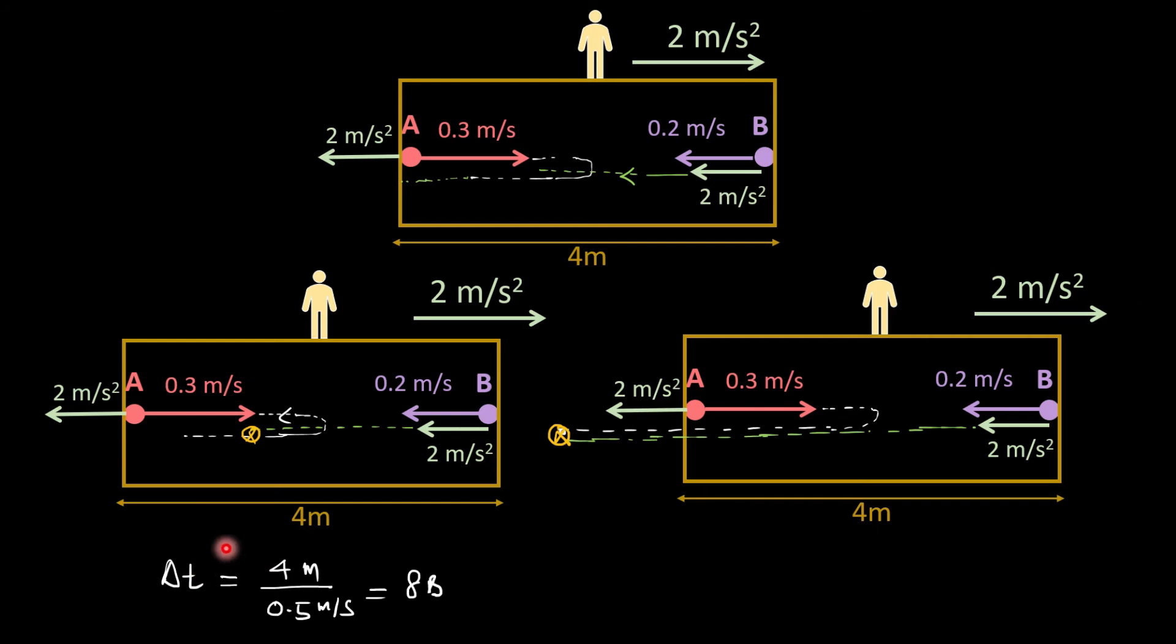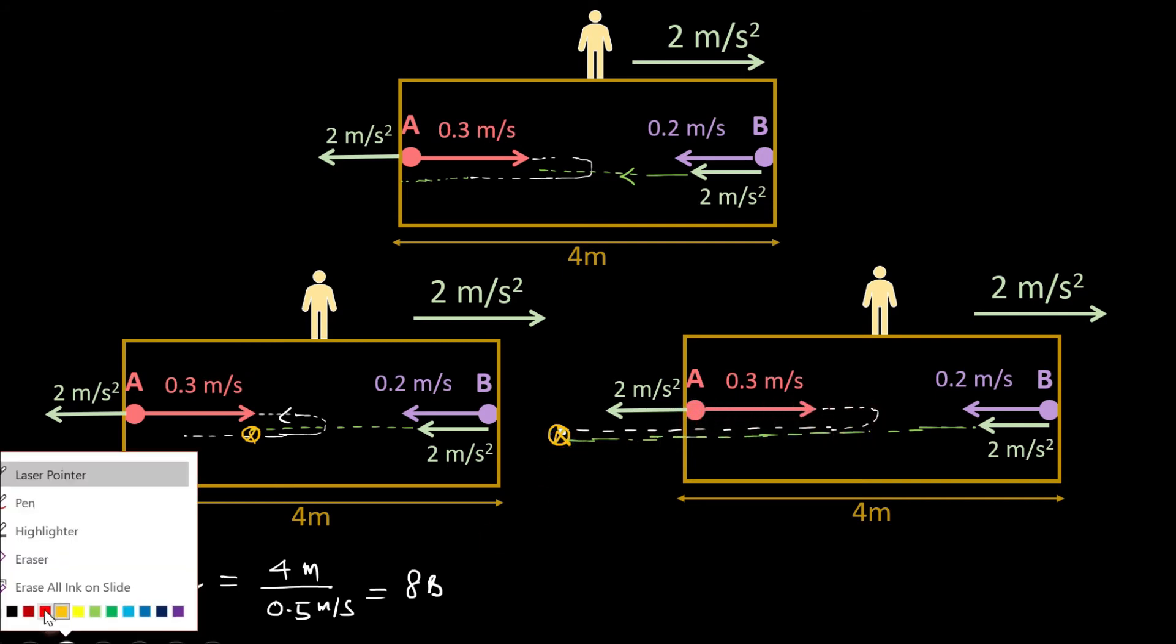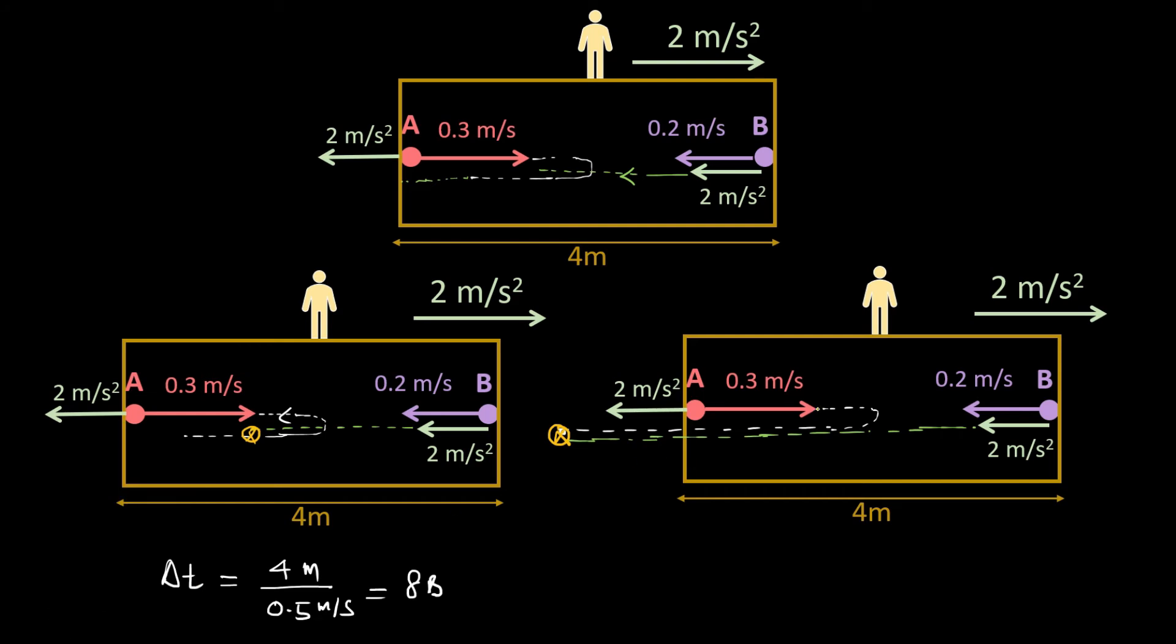And this time of collision we calculated before here as 8 seconds, but this will be true if it crosses from here to here. Only then will it collide here. So let me calculate what is the time of motion of A up to here.